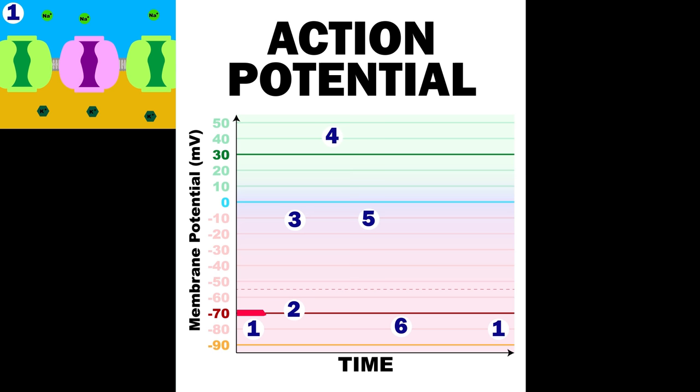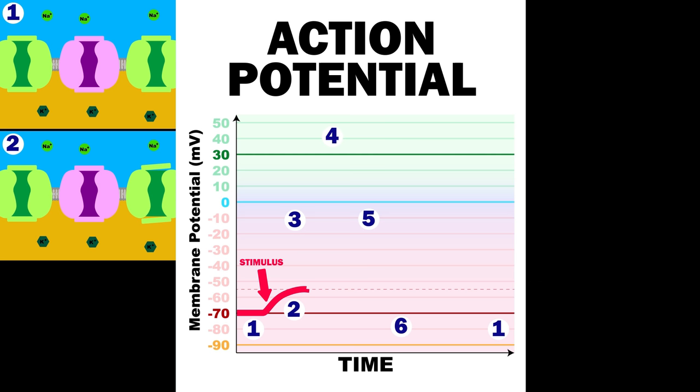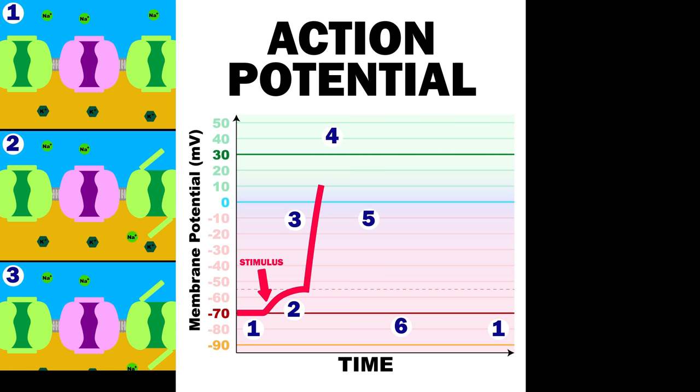We start off at resting potential. Voltage-gated sodium and potassium channels are closed. Then, a stimulus causes some voltage-gated sodium channels to open. Once we get to the threshold of minus 55 millivolts, the action potential begins, with lots of other voltage-gated sodium channels opening.